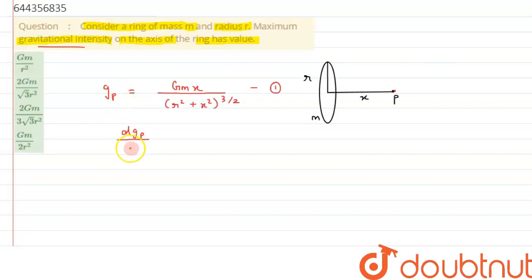That is, differentiation of dG with respect to X and equate it to 0. So therefore, from here we can say we will apply quotient rule for differentiation. So this can be written as (R² + X²) raised to 3/2